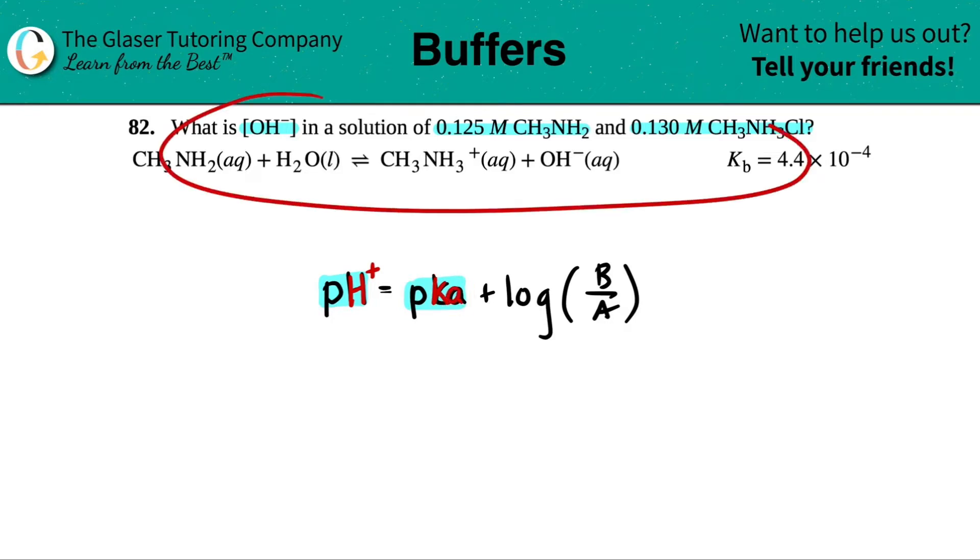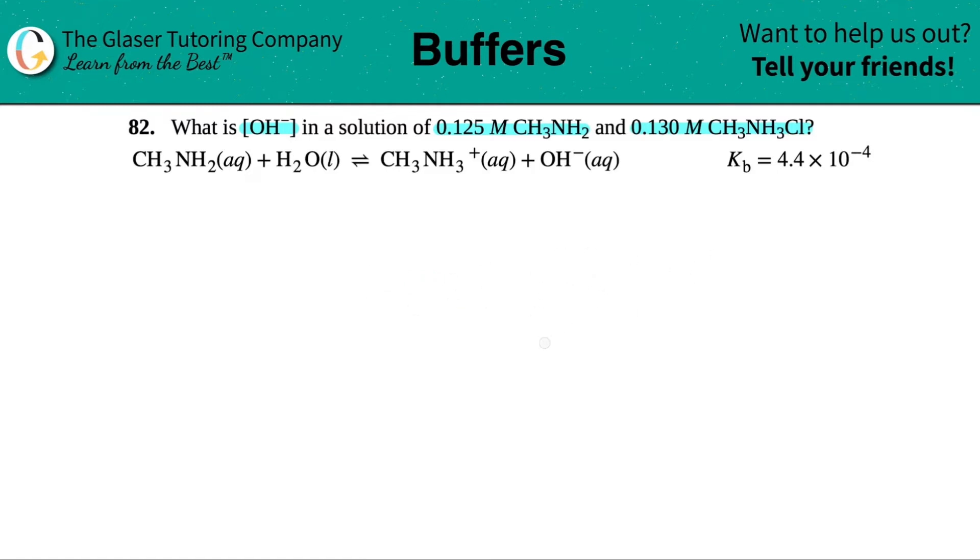But in this question, they give us a Kb and they're looking for the hydroxide ion. So in this case, we're on the base side of things. Using the Henderson-Hasselbalch equation isn't probably the right thing or the best way to do it, mainly because there's so many different conversions you would have to do. So we're going to try a different way. The other way to use buffers is to just go straight to the balanced equation. So that's what I'm going to do.